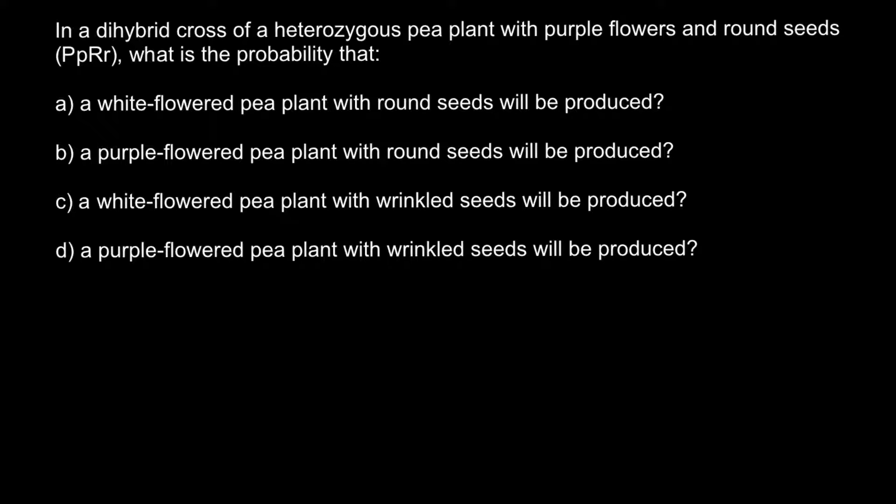So in the dihybrid cross of a heterozygous pea plant with purple flowers and round seeds, as you see we have a heterozygous condition for both genes. There are four answer choices. We have two traits: one is the color of the flowers and another is the shape of the seeds. Essentially our problem states that we have to self-pollinate these plants, or self-cross.